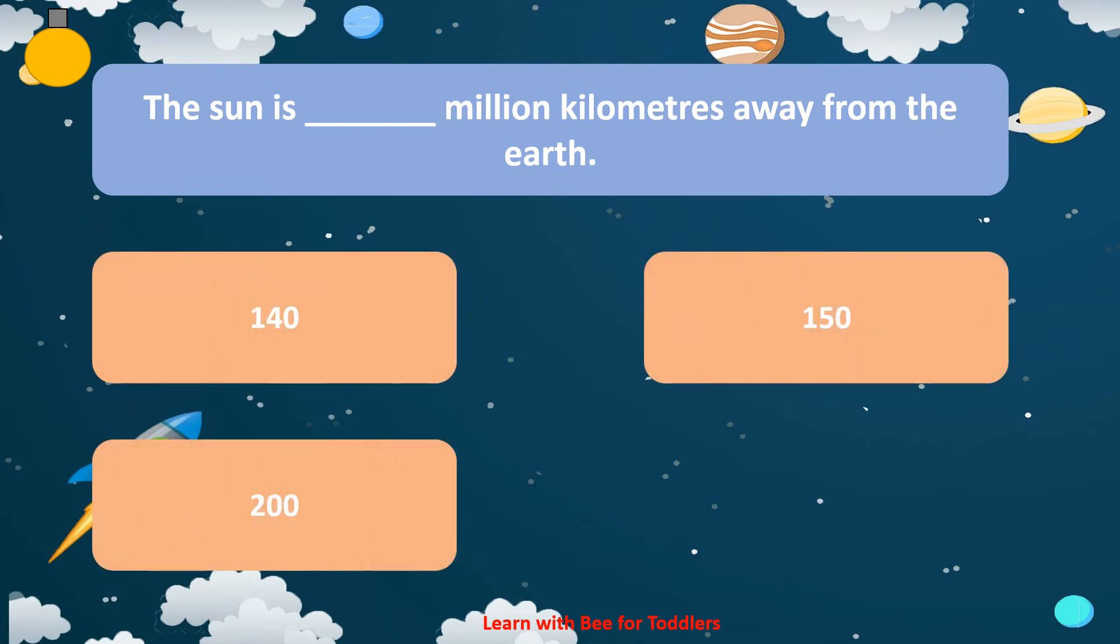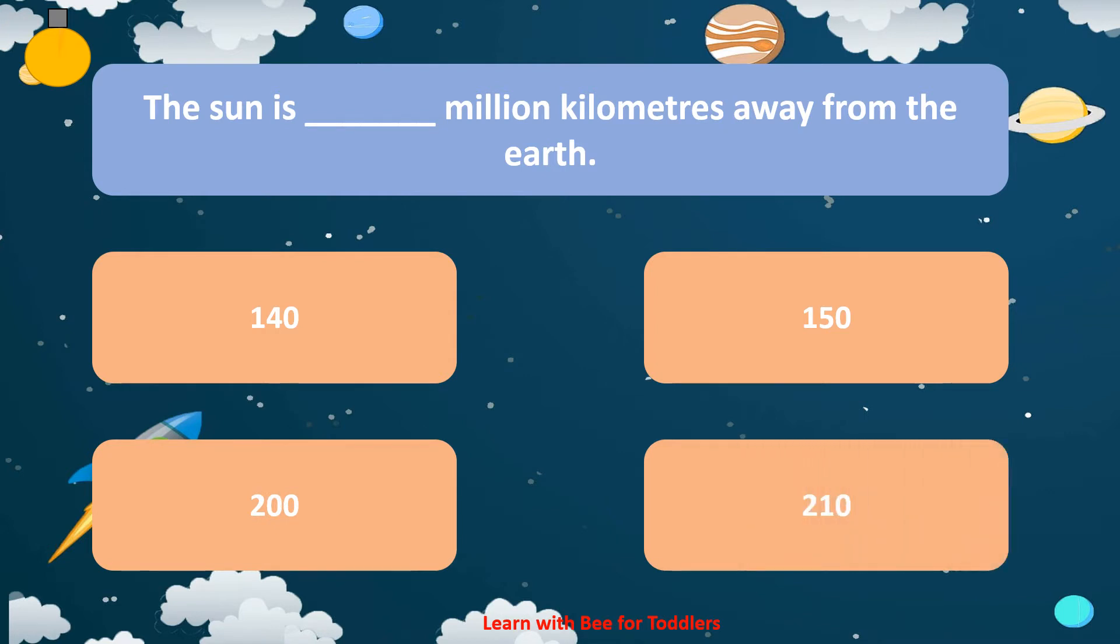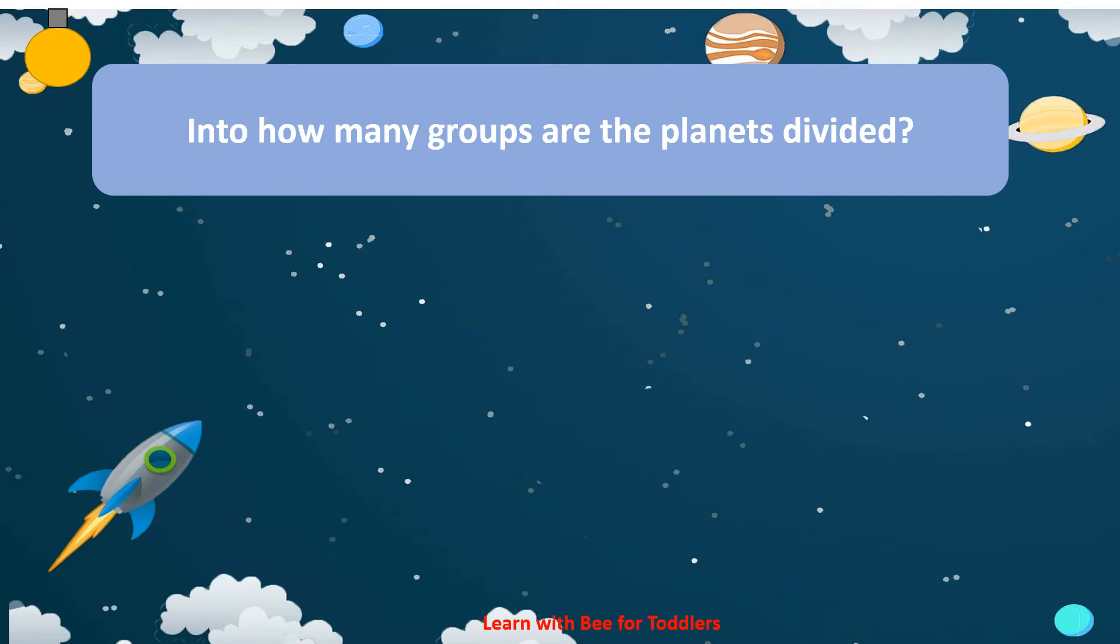150. 200. 210. 150. Into how many groups are the planets divided? 3.